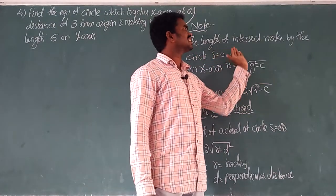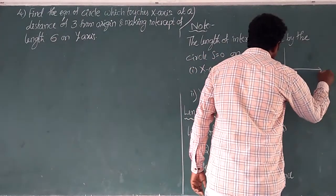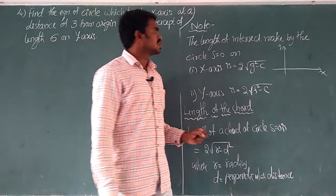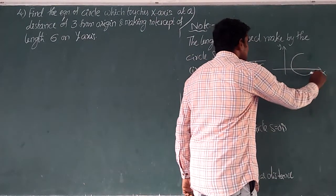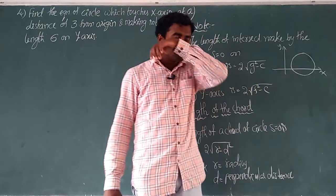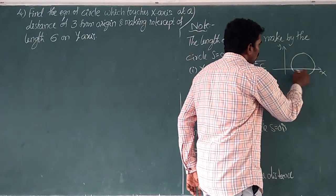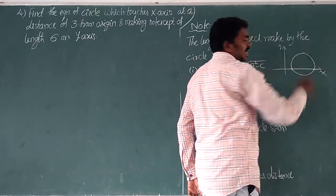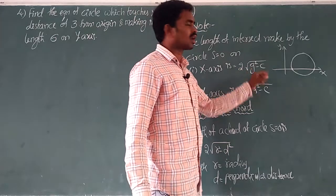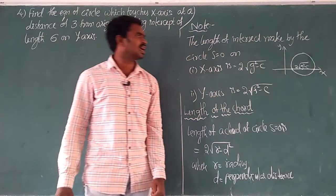What do you mean by intercept made by the circle on the x-axis or y-axis? This is the x-axis, this is the y-axis. If the circle passes through two points on the x-axis, that makes the intercept — the path from one point to another is called the length of intercept made by circle S = 0. That length on x-axis is 2√(g² − c).